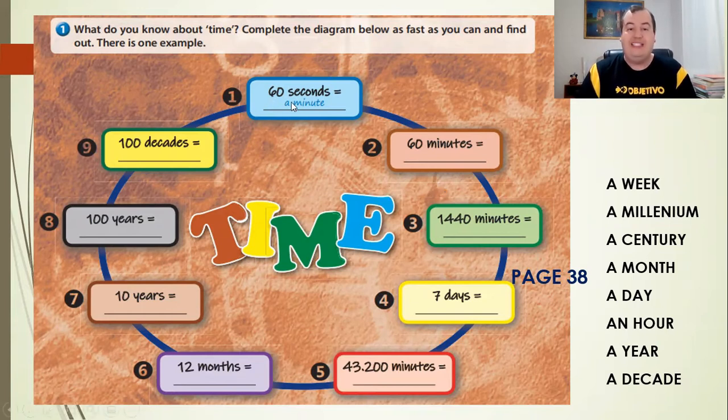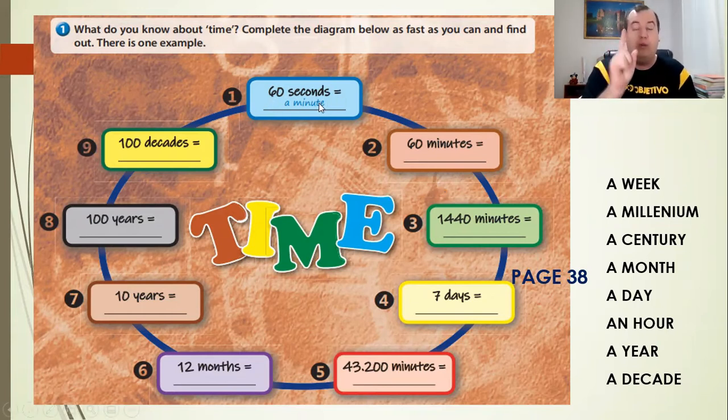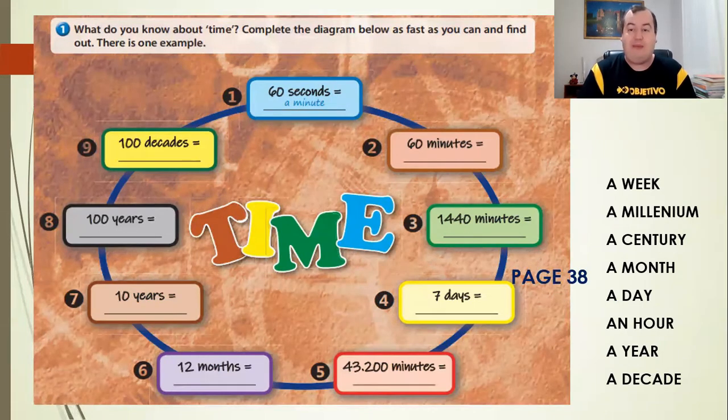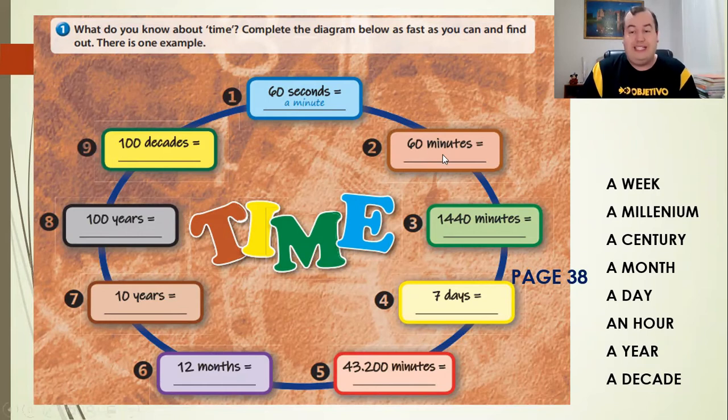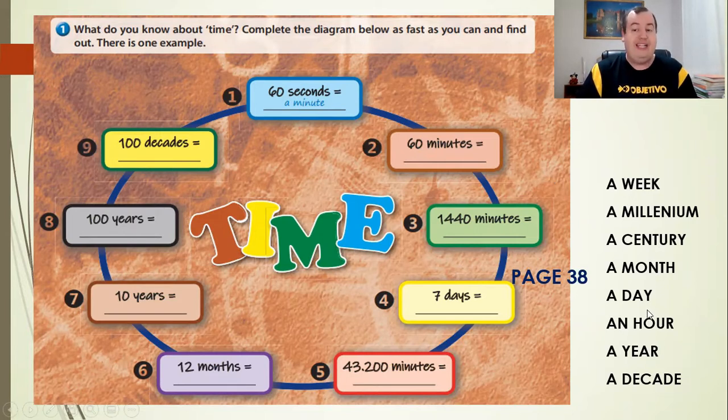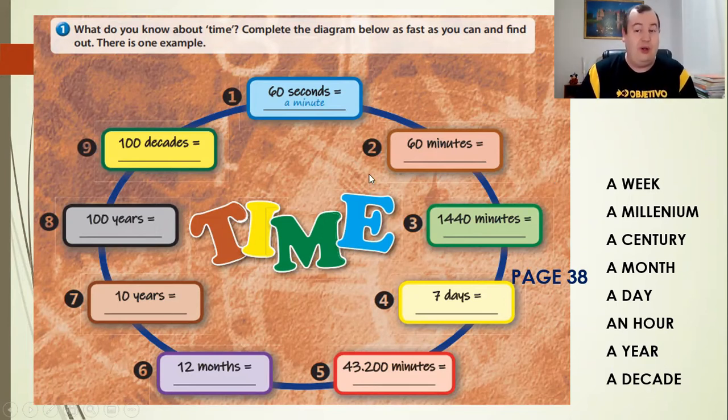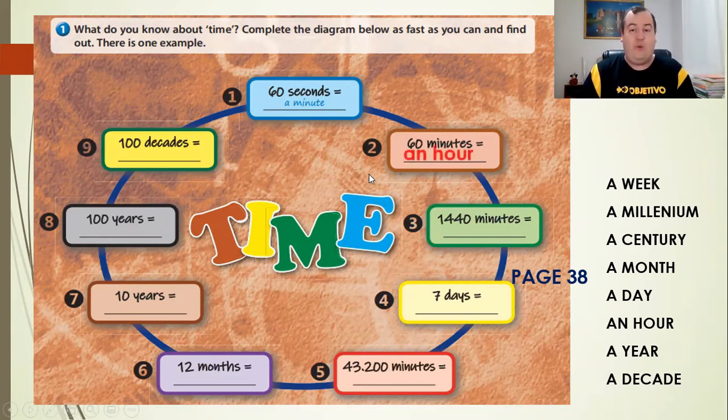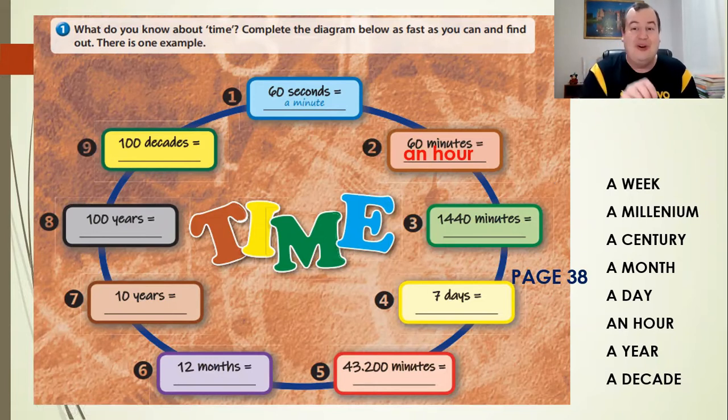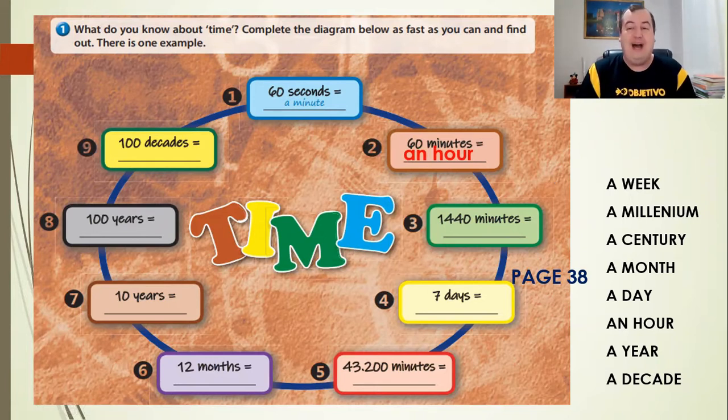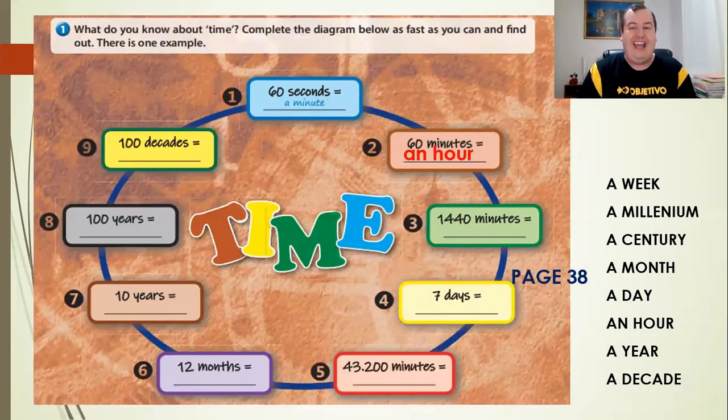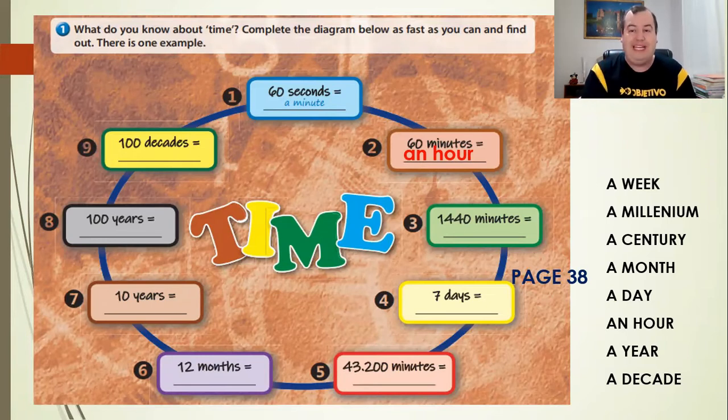For example, number one, 60 seconds, it's equal, equals one minute, okay? 60 seconds equals one minute, a minute. And, for example, 60 minutes, is it equals a week, a millennial, a century, a month, a day, an hour, a year, or a decade? What do you think? I will help you one number two. 60 minutes, it equals an hour, okay? Now, it's your turn. I want you to do it by yourself. So, please, pause the class and do it. After you have completed till number nine, you play the class again, okay?